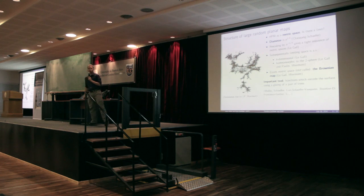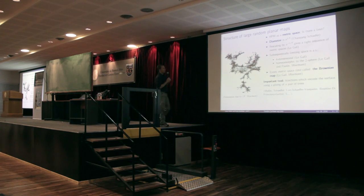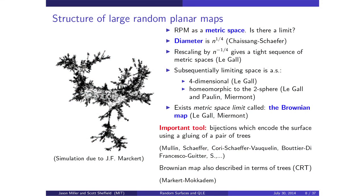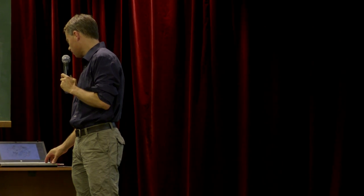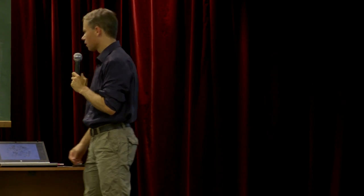An important tool is that the combinatorics introduced by Cori-Schaeffer is based on the idea that you can take a pair of trees and glue them together to make a surface. I'll explain in this picture how that's done. Here's another embedding of a quadrangulation.